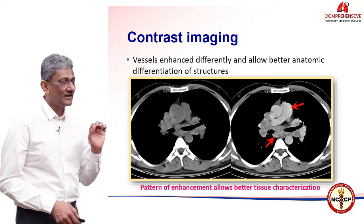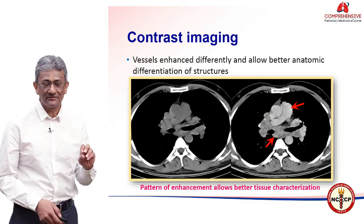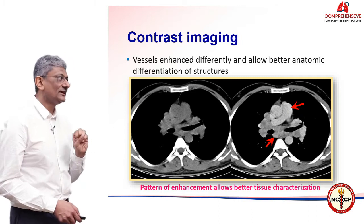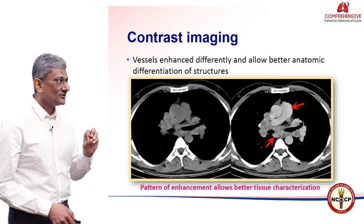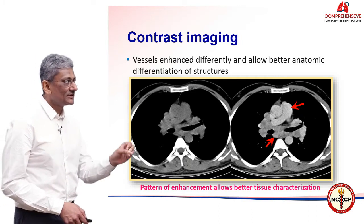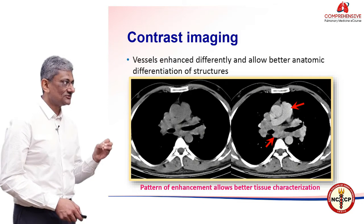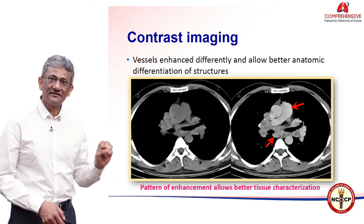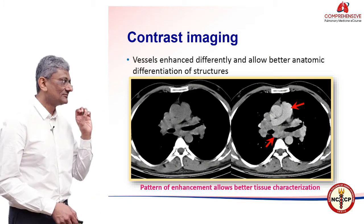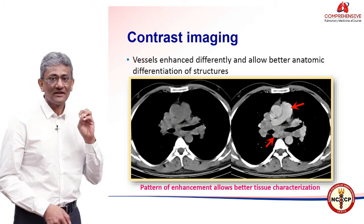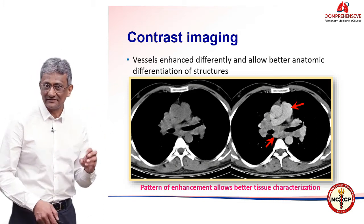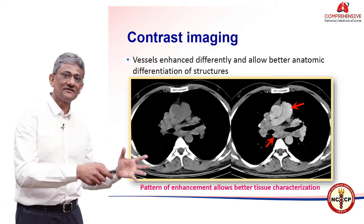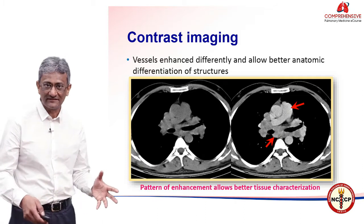On the right, the arrow points to the pulmonary artery which is opacified by contrast, and the arrowhead shows the lymph node which does not pick up the intravenous contrast to that extent and can be separately and easily distinguishable from the pulmonary artery. Since the vessels enhance differently after giving contrast, we can separate out the vessels from the other structures in the mediastinum.